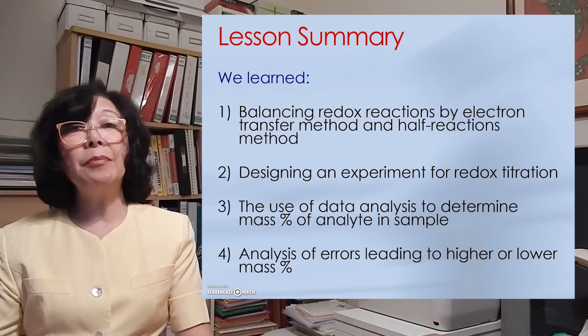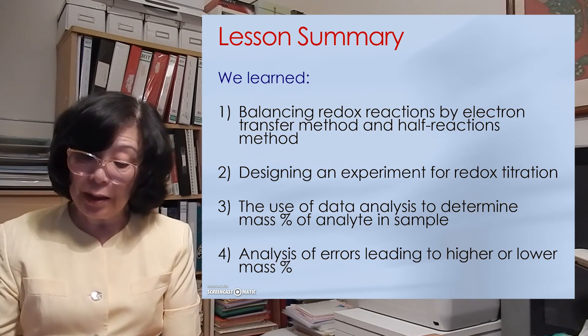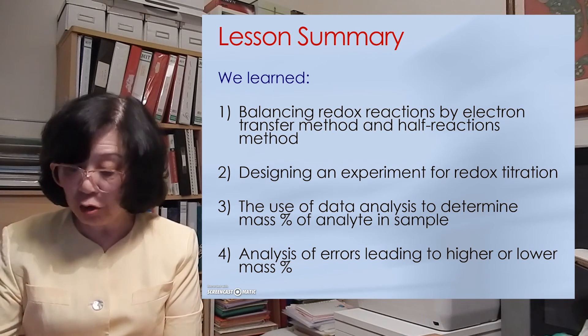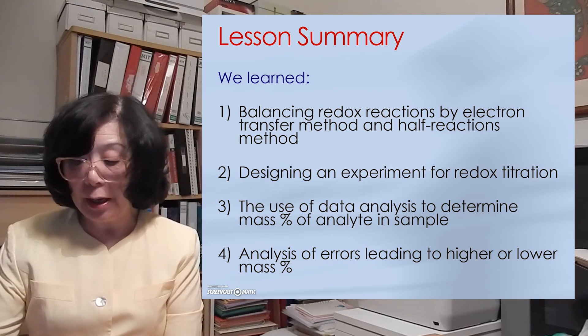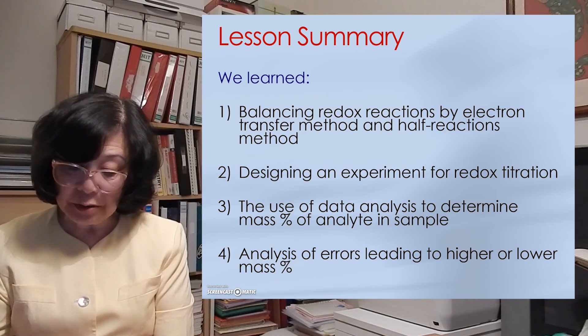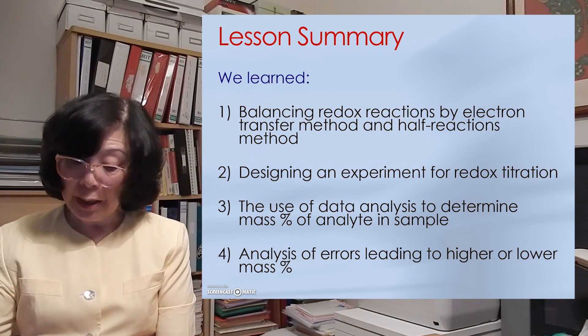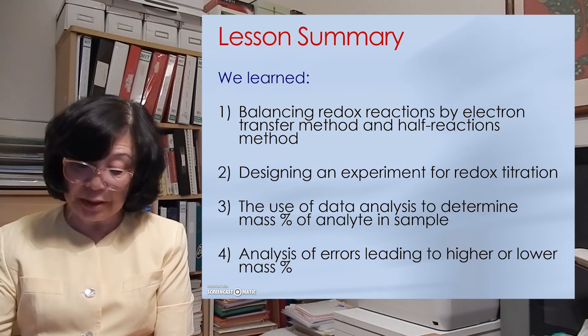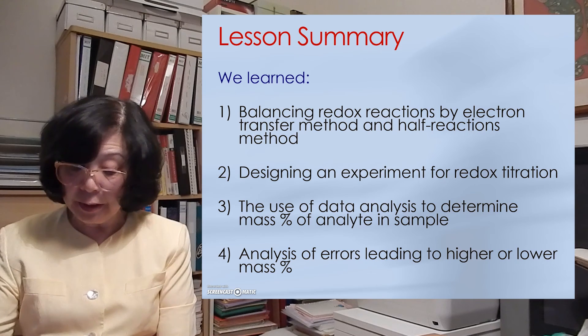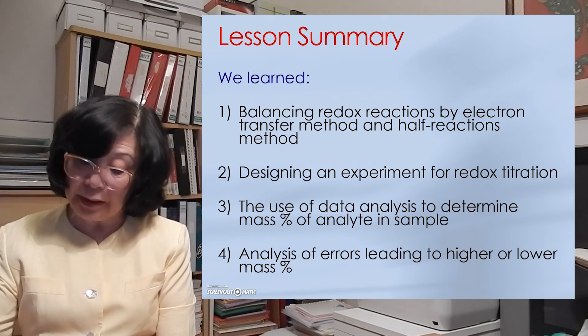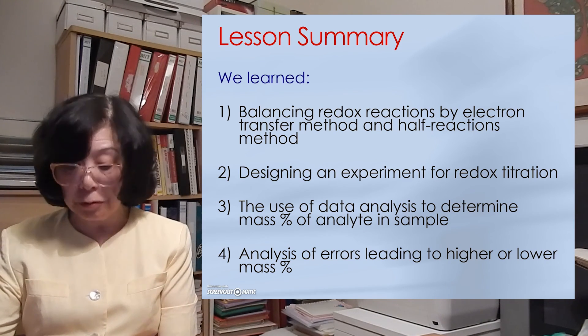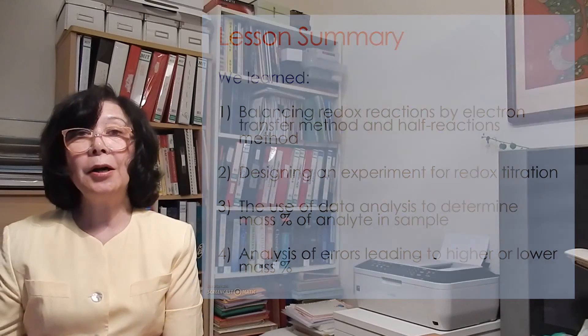To sum up what we have learned today: we learned how to balance redox reactions by the electron transfer method and the half-reaction method. We also designed an experiment for the redox titration, did data analysis to determine the mass percent of analytes in the sample, and analyzed errors that would lead to either higher or lower mass percent. I hope you have found this lesson useful. I welcome any comments from you, and I hope to see you again next time.